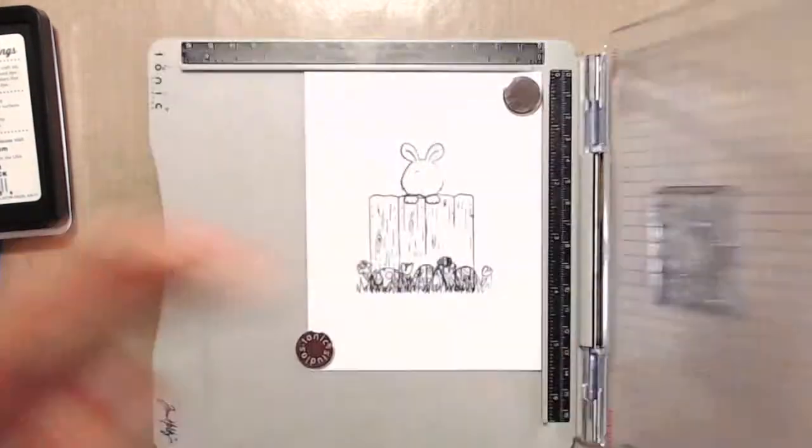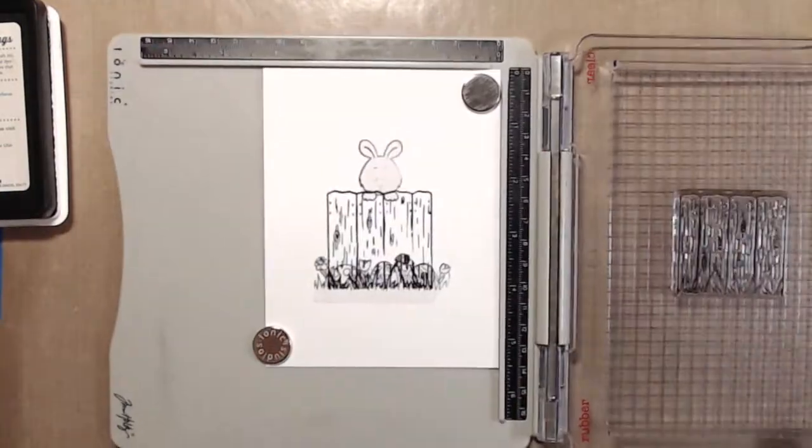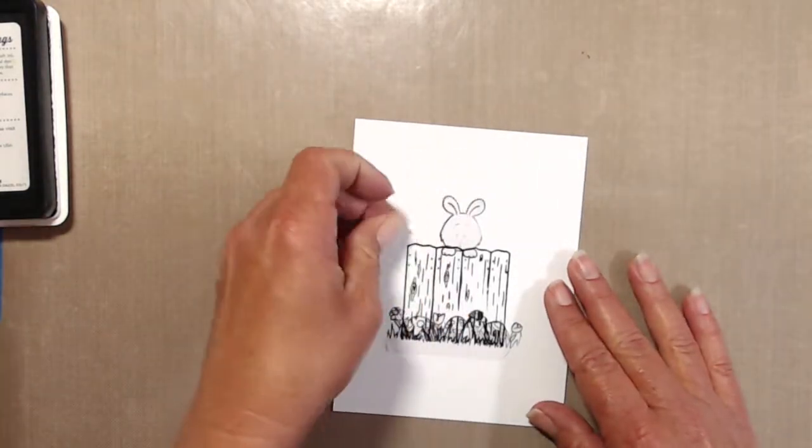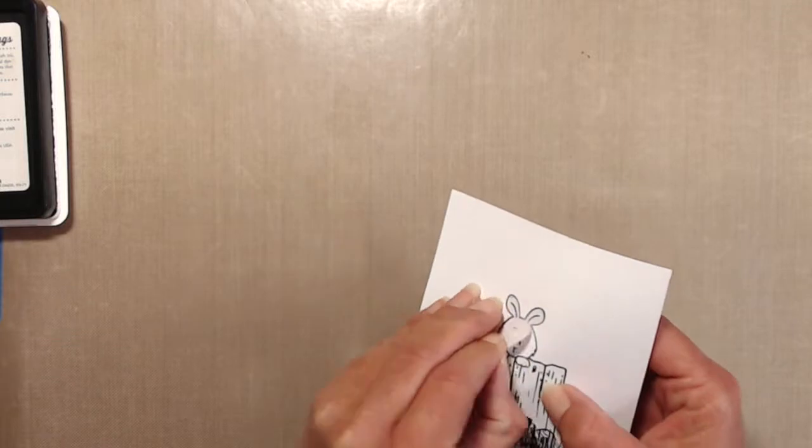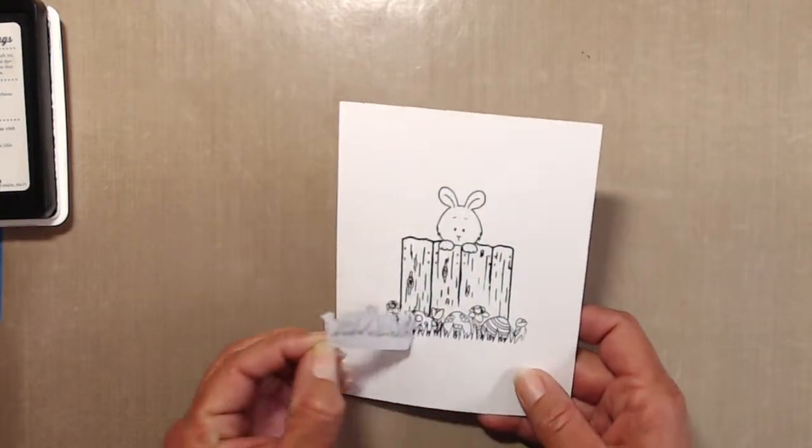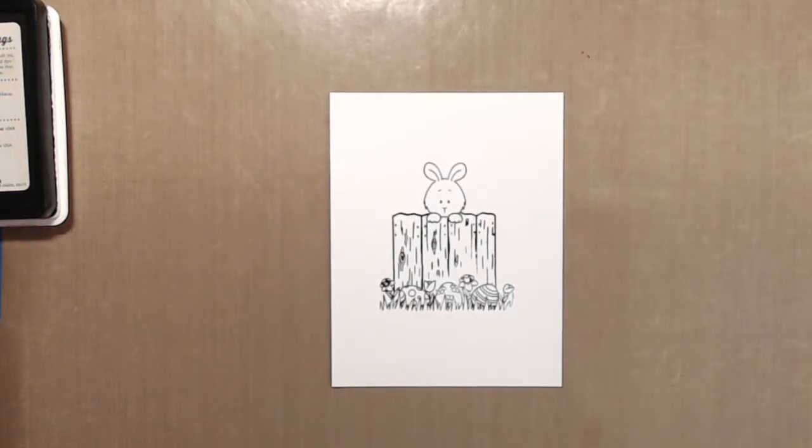Then it was time to remove all the masks, and as you can see, the bunny is in front of the fence and the row of Easter eggs is in front of the fence. Those were just a few tips I wanted to share: create a temporary mask just to help with placement, and remember that whatever you want to be in front is what you stamp first.